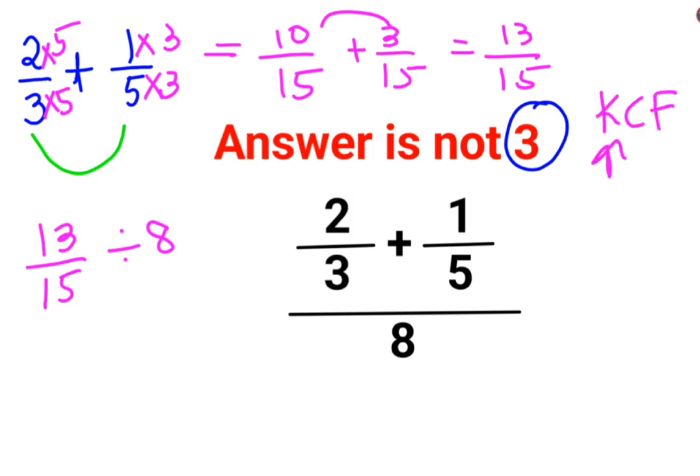Where K stands for keeping the first number as it is. C stands for changing the division sign to multiplication.